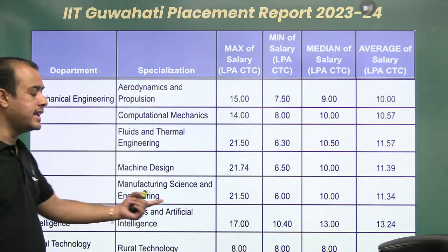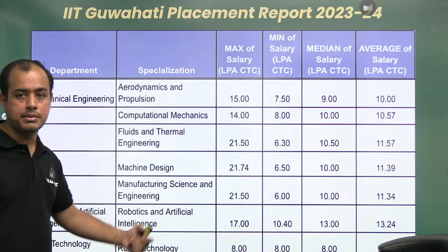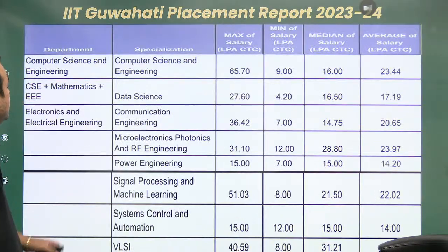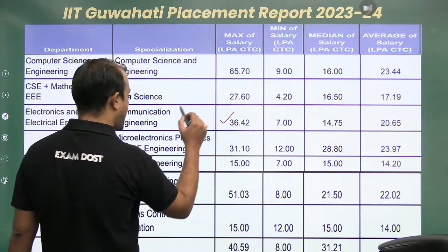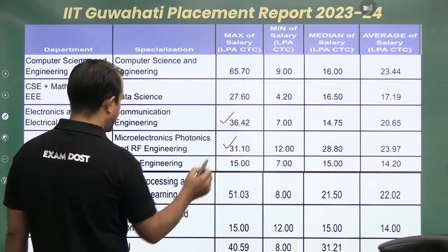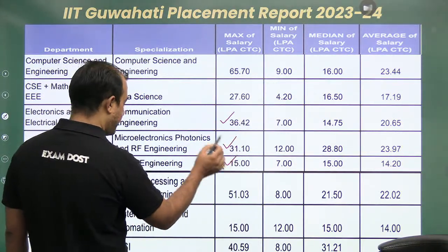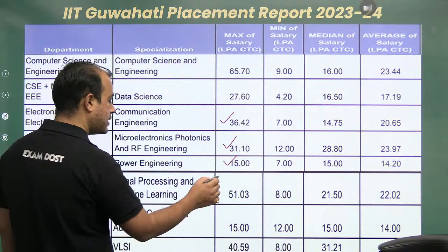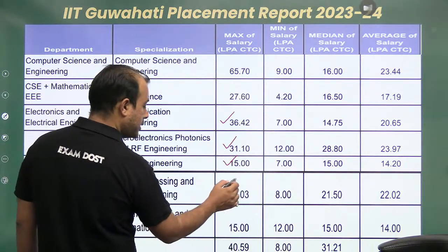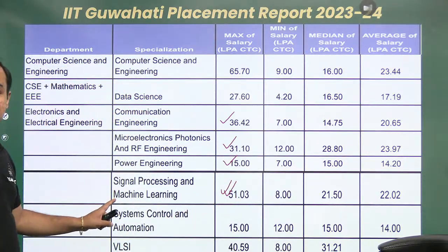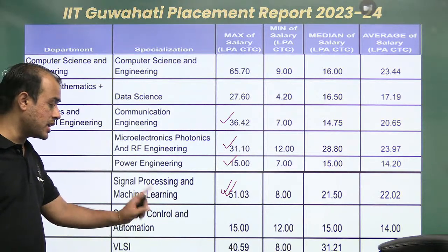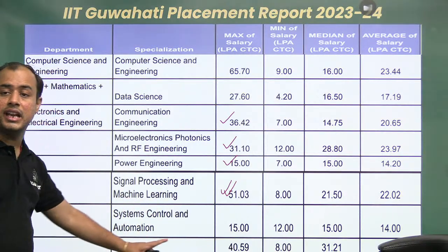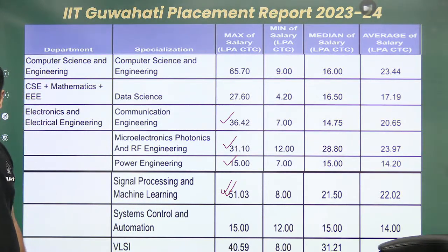Regarding packages — in Robotics and AI, the maximum package is 17 lakh. In Electrical and Electronics: Communication 36 lakh, Microelectronics 31 lakh, Power Engineering 15 lakh, Signal Processing 51 lakh, System Control 15 lakh, and VLSI 40 lakh. The packages are very good.